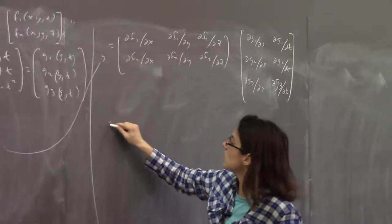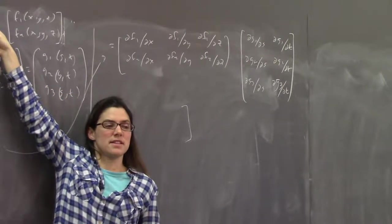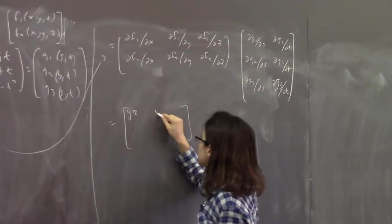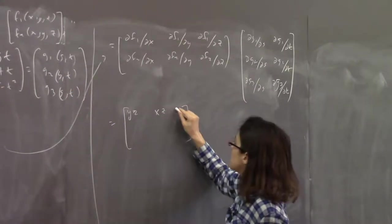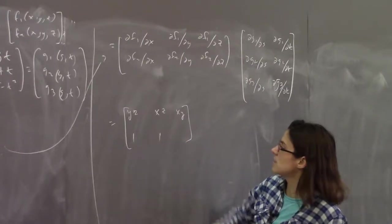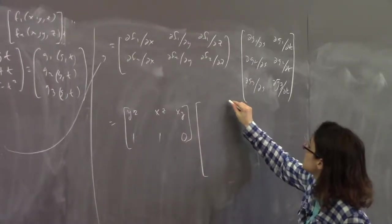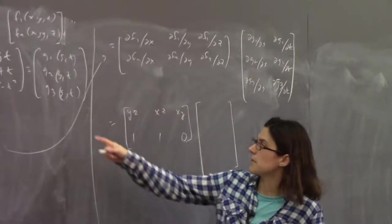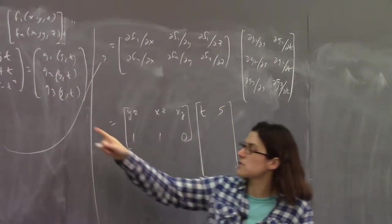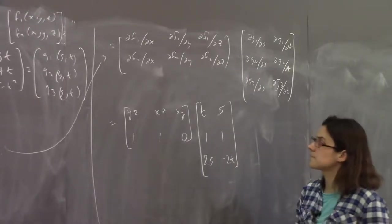Let's compute these. ∂f₁/∂x = yz, ∂f₁/∂y = xz, ∂f₁/∂z = xy. And for f₂ = x+y: ∂f₂/∂x = 1, ∂f₂/∂y = 1, ∂f₂/∂z = 0, because z isn't in it at all. For the partials of g: ∂g₁/∂s = t, ∂g₁/∂t = s; ∂g₂/∂s = 1, ∂g₂/∂t = 1; ∂g₃/∂s = 2s, ∂g₃/∂t = −2t.